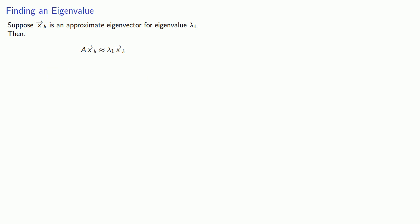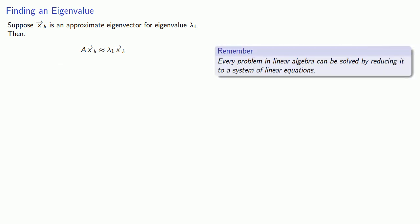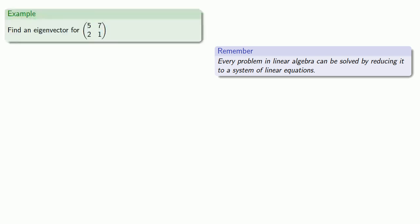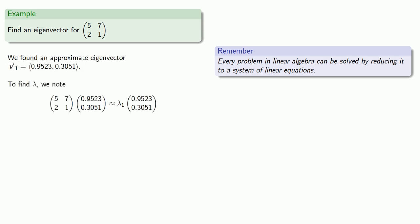And so now we invoke our universal strategy. Every problem in linear algebra can be solved by reducing to a system of linear equations. So we found, or at least we think we found, an approximate eigenvector. And so to find lambda, we'll apply A to this vector. And if we compare the two sides, we actually get two equations where lambda 1 is the unknown.